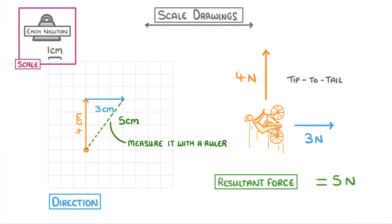To find the direction of the force, we just measure this angle here with a protractor, which would give us around 37 degrees. So we could say that the resultant force is 5 newtons at a bearing of 37 degrees from north.